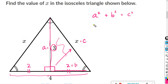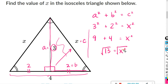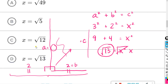A squared is 3 squared, B squared is 2 squared, and C squared is X squared. 3 times 3 is 9, 2 times 2 is 4, equals X squared. 9 plus 4 is 13. To solve for X, take the square root of both sides — the square root of X squared is just X, and that equals radical 13. So the answer is radical 13.